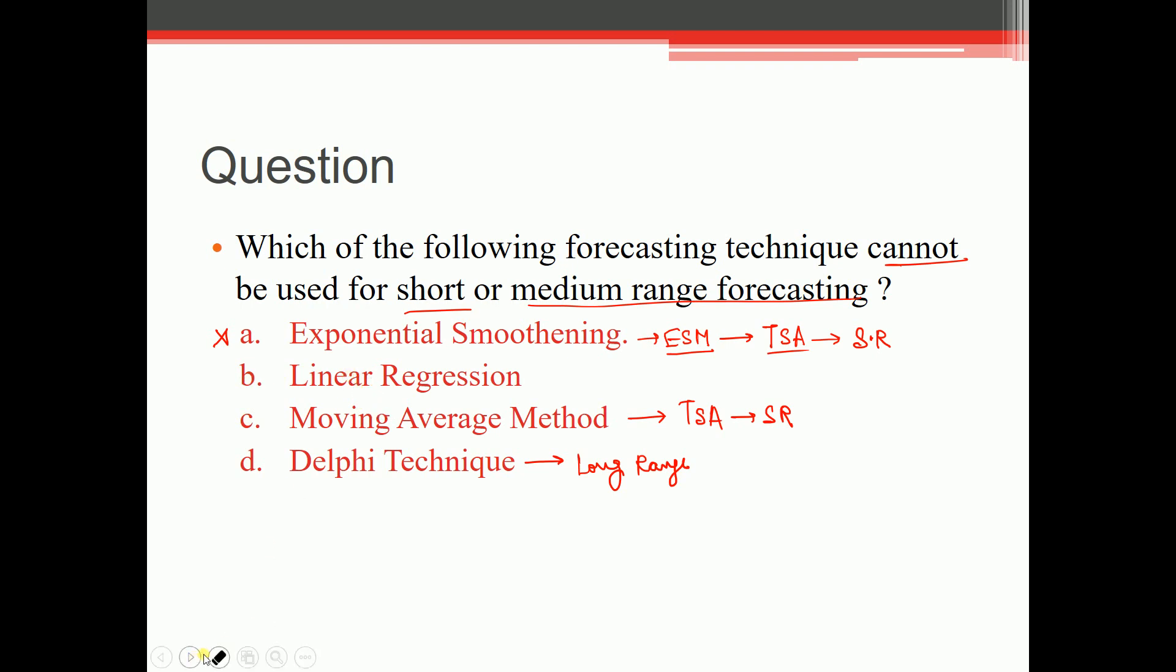So this as you can see out here, this linear regression was used for medium range. This comes under casual or econometric. So this is not the answer. What is being asked? Which is not used for short or medium. So obviously this is not, this is not. This is used for short and this is used for medium. So these are not the answer. This is also used for short, so this is also not the answer. Then we have the last one which is left and it is used for long range. And hence this is my correct answer.